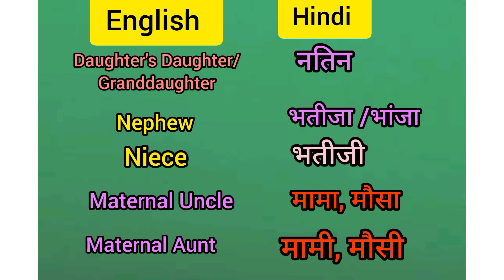Nephew — Bhatija, Bhanja. Niece — Bhatiji, Bhanji. Maternal Uncle — Mama, Mosa. Maternal Auntie — Mami, Mausi.